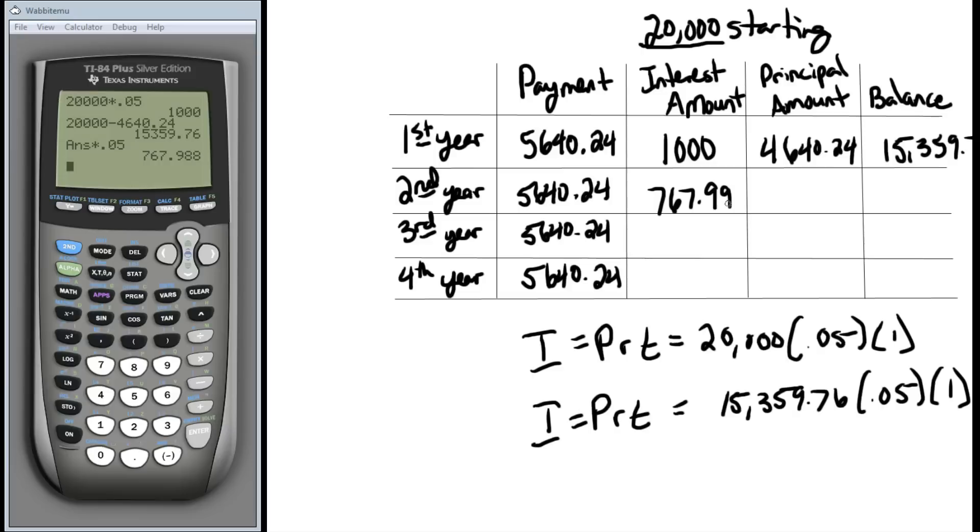Which means this year, even more of our payment will go towards principal. I'm going to have a lot less taken out to pay off interest first, so I'm going to have more left over to bring down the balance. So $5,640.24 minus $767.99 leaves us with $4,872.25 that's being applied towards the balance. So more is being applied to the balance than last year. Our balance is this $15,000 number.